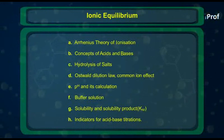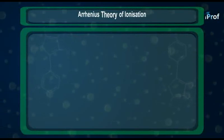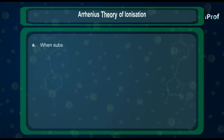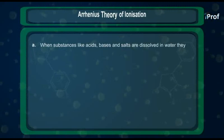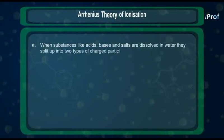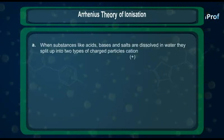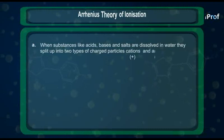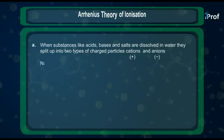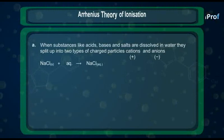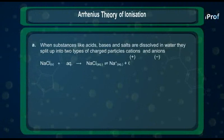Let us now begin with Arrhenius theory of ionization, whose main postulates are: First, when substances like acids, bases, and salts are dissolved into water, they split up into two types of charged particles. Particles carrying positive charge are called cations and those carrying negative charge are called anions. For example, when sodium chloride solid is dissolved into water, it splits up into Na⁺ and Cl⁻ ions.